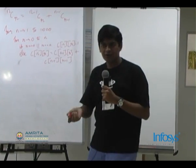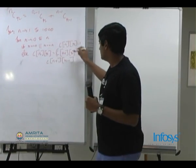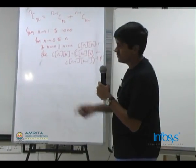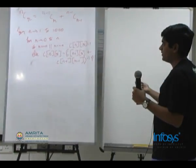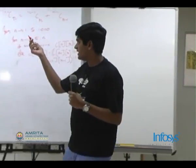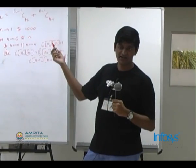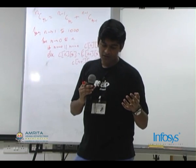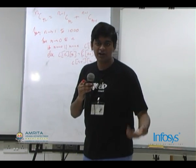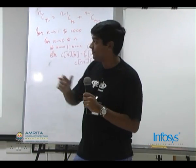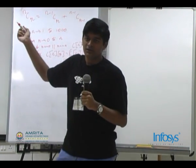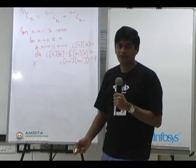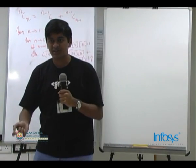If you want to compute it modulo some value p, you just need to do mod p and this will compute the combinations properly. This is an example of tabulation. The second area of dynamic programming is optimization — for example, shortest path in a graph. You use dynamic programming when you want to compute the minimum or maximum value attained by a function.